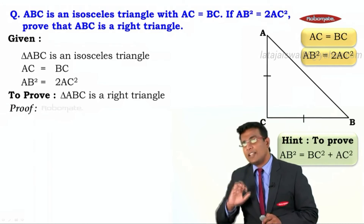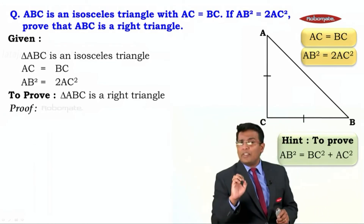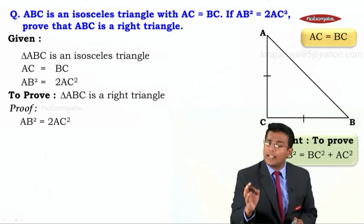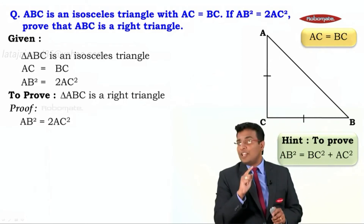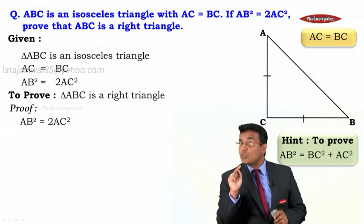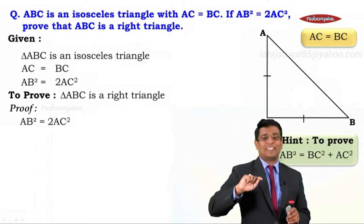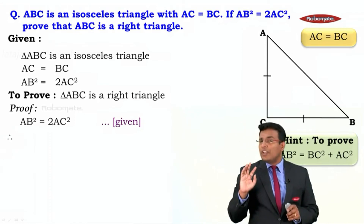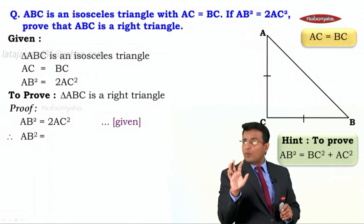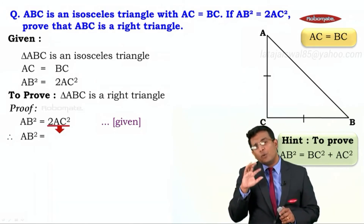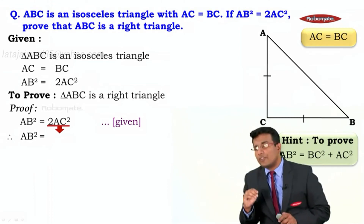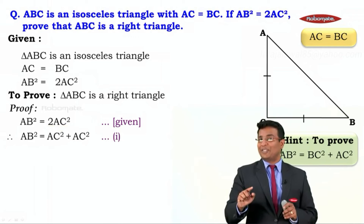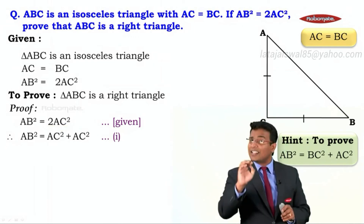Looking at the given, the very first thing we have is AB square is equal to twice of AC square. We want to arrive at AB square equals BC square plus AC square. Now, twice of AC square can be written as AC square plus AC square. Let us call this result number one.